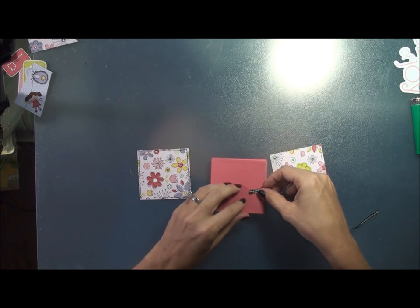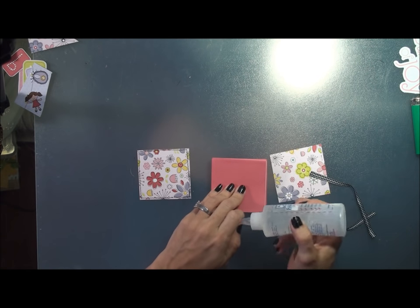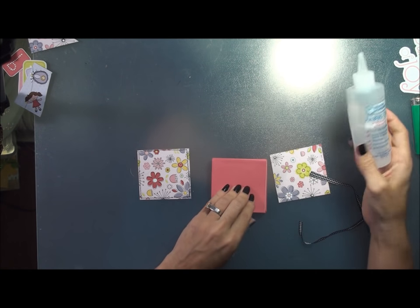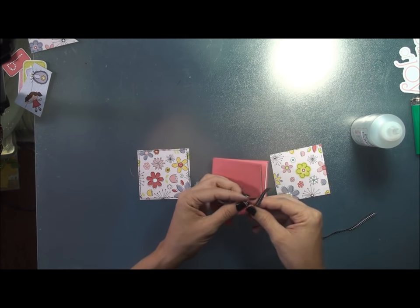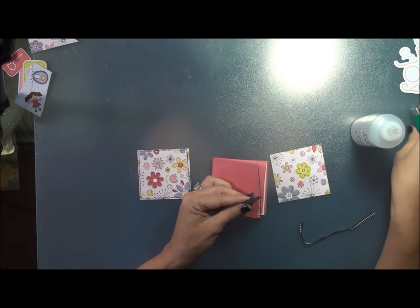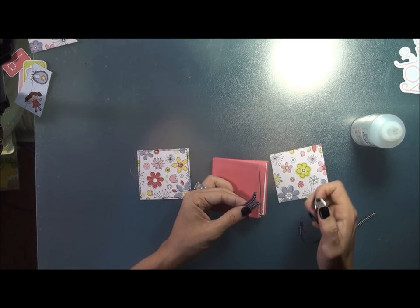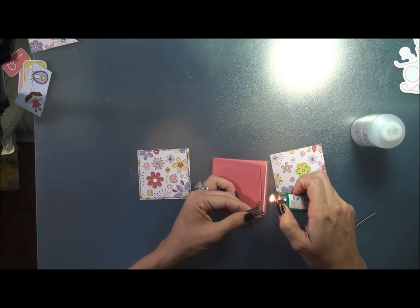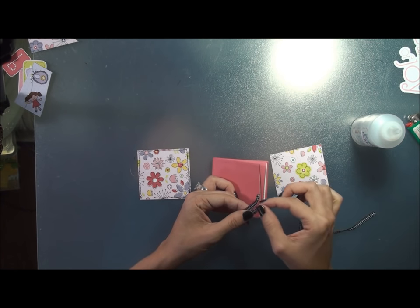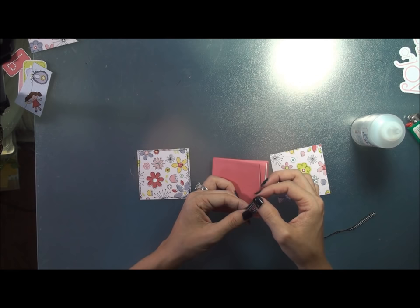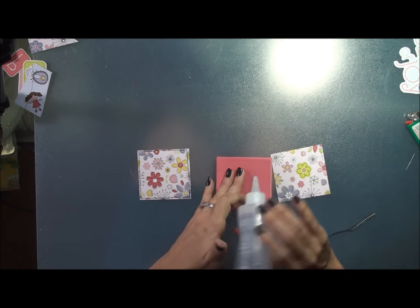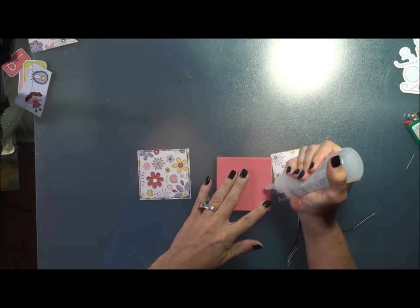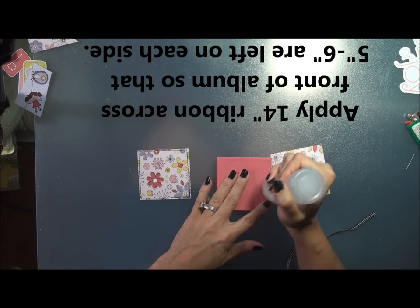And these will be what you use to actually close your mini album. So go ahead and apply your ribbon. I like to use Fabri-Tac. And actually what I do like to do first is I like to heat seal my ribbon so that it won't fray. So I just get a little fire to them and it just kind of seals the edges for you.